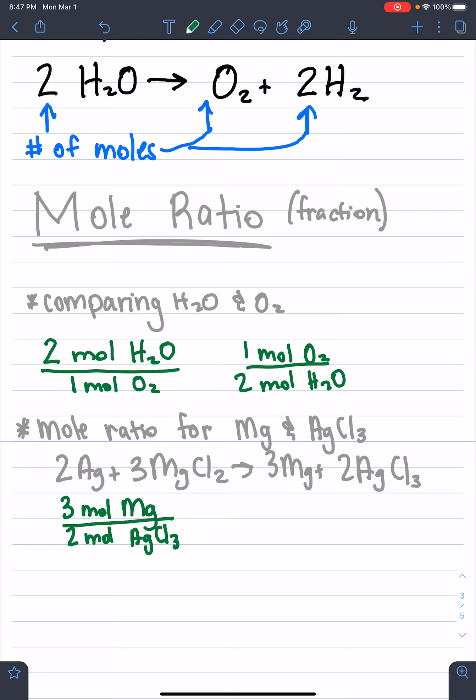Also the reverse is true. So if we had the other mole ratio, we could have 2 moles of AgCl3, and we'll have 3 moles of Mg.